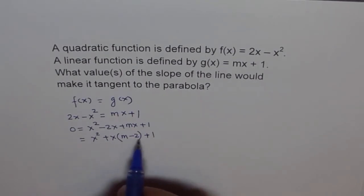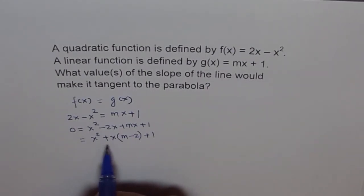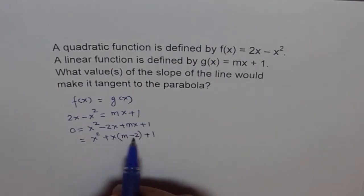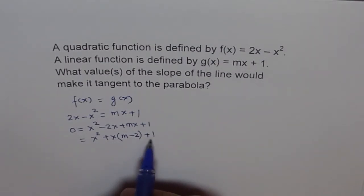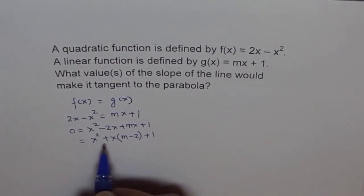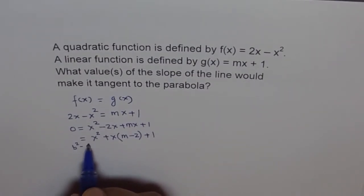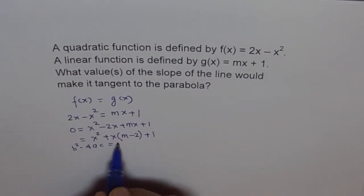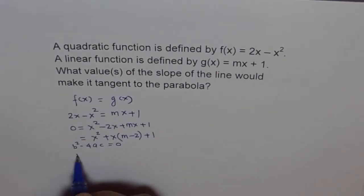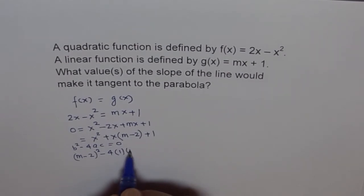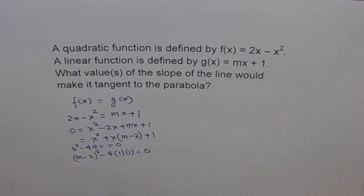For this to have one solution, the discriminant should be 0. Here b is (m - 2), a is 1, and c is 1. So we equate b² - 4ac = 0, giving us (m - 2)² - 4 × 1 × 1 = 0.